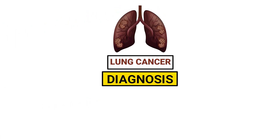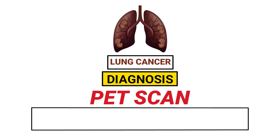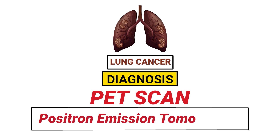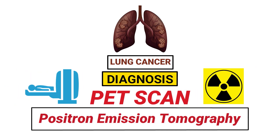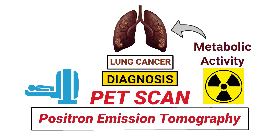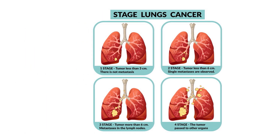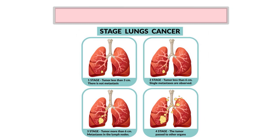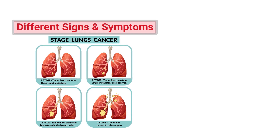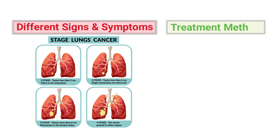The diagnosis of lung cancer can be confirmed with a PET scan, or more formally known as positron emission tomography — an imaging technique that uses radioactive substances to examine the metabolic activity of the lungs. There are different stages of lung cancer that may each result in different signs and symptoms.